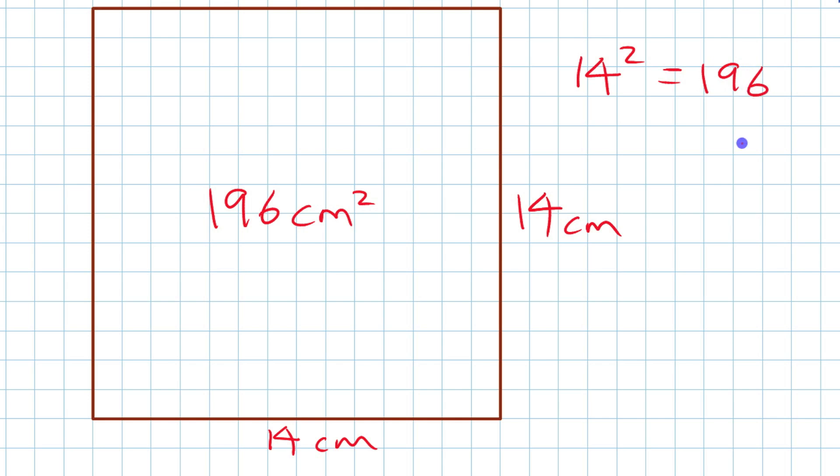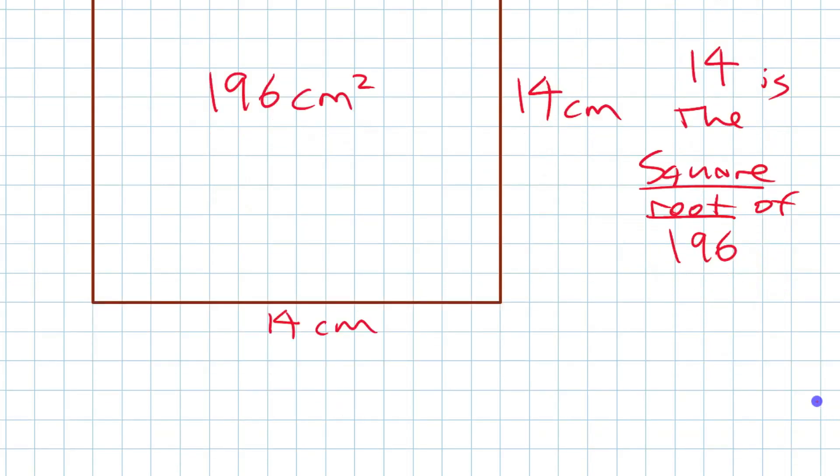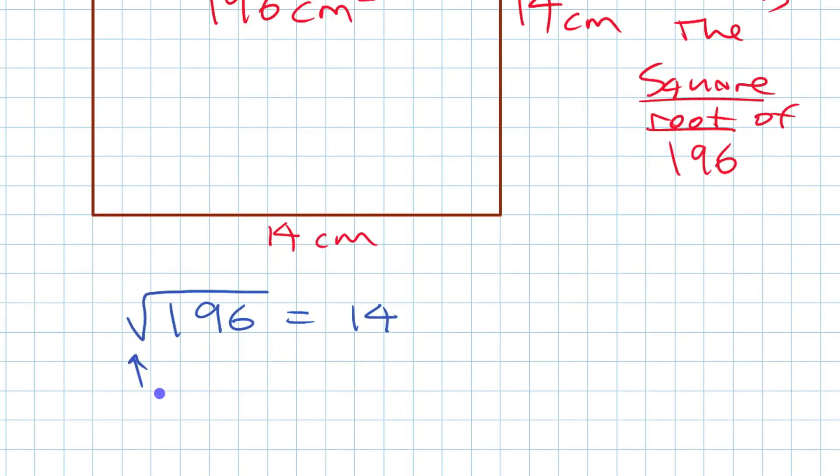Now you could turn it around and say it the other way. You can say 14 is the square root of 196. Square root. Now if you want a definition of square root, it's a number that when multiplied by itself gives you your number. Now there's a symbol you should learn for square root that we're going to look at right now. And you may have seen it on calculator. Most scientific calculators have it. It's this symbol right here. The square root of 196 is 14. That's what that symbol means. This means the square root of...